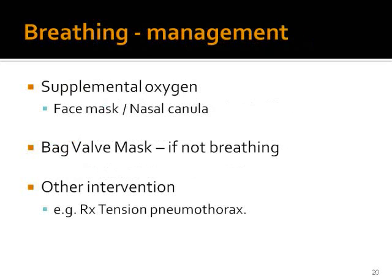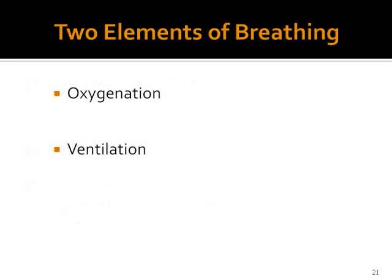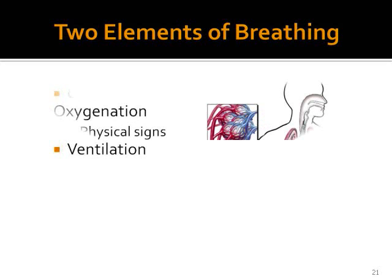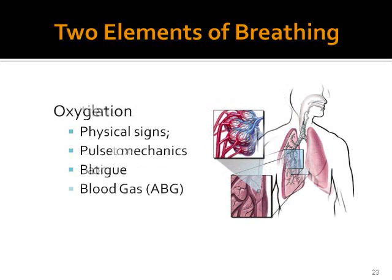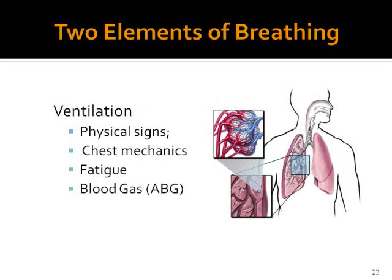We then institute management accordingly by giving supplemental oxygen and any other required intervention. When we assess for breathing, we are actually assessing two parameters: oxygenation and ventilation. We assess oxygenation by checking physical signs such as cyanosis, using a pulse oximeter, and doing arterial blood gases. We check ventilation by examining the chest, checking chest mechanics, checking whether the patient is fatigued on respiration, and also by arterial blood gases.